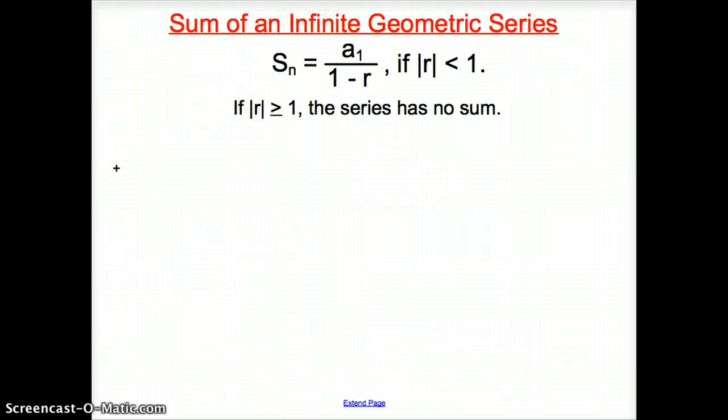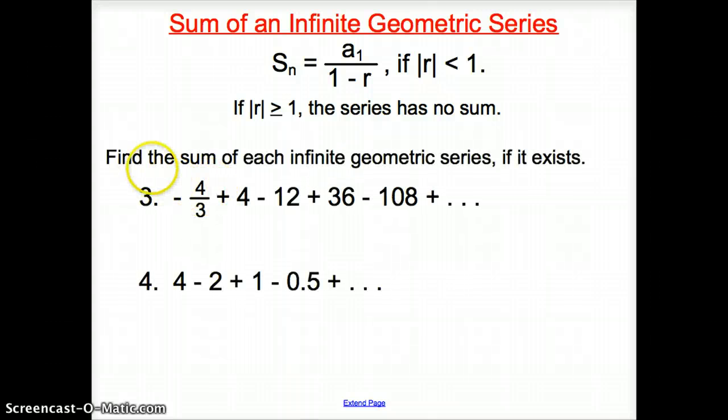Now we have the sum of an infinite geometric series can be found using this. If you look at the first slide, notice where this comes from. It is the infinite geometric series. And now R has to be less than 1. Because if R is not less than 1, the series has no sum. So let's try something. Find the sum of each infinite geometric series if it exists. So let's see what happens here.